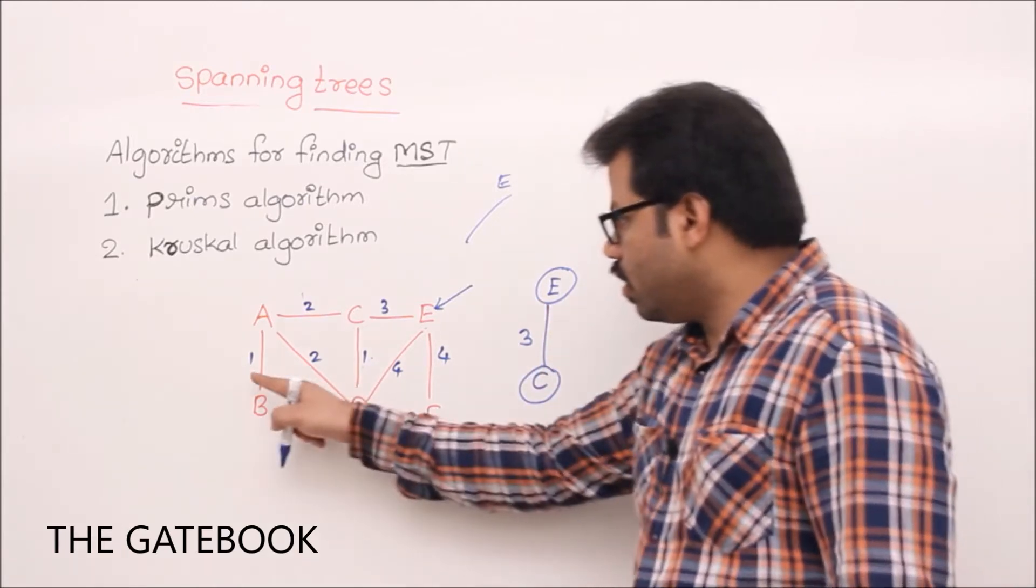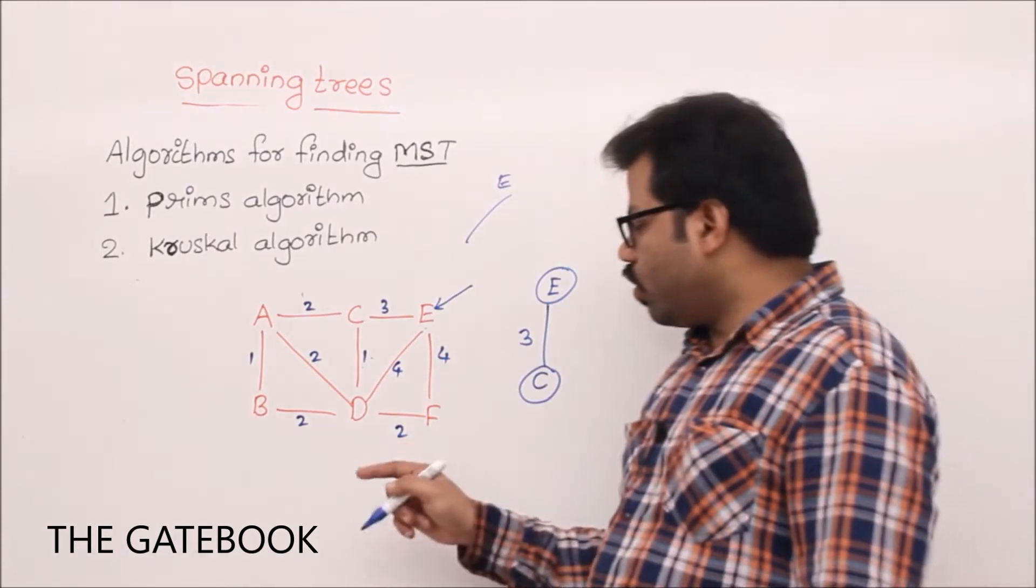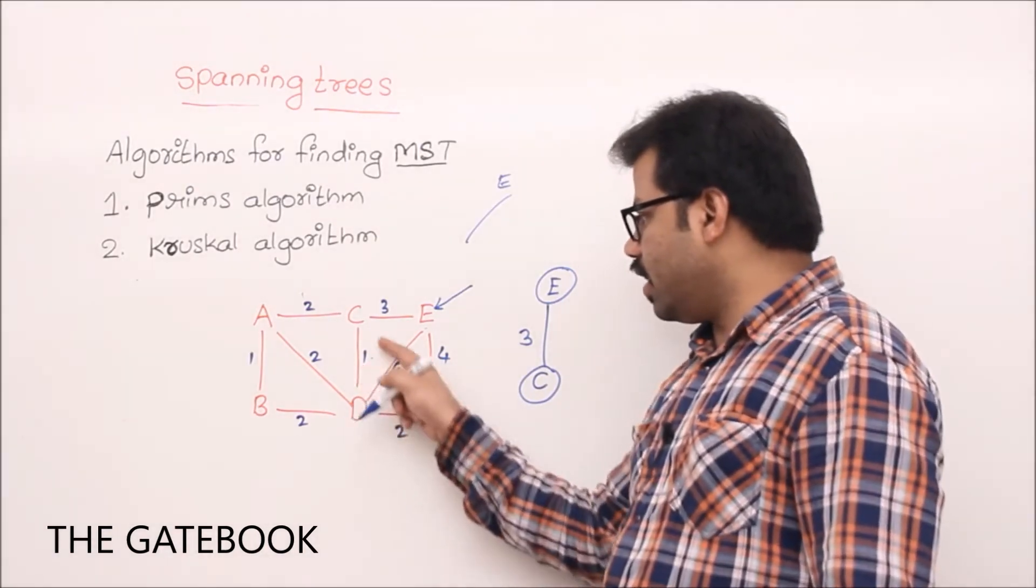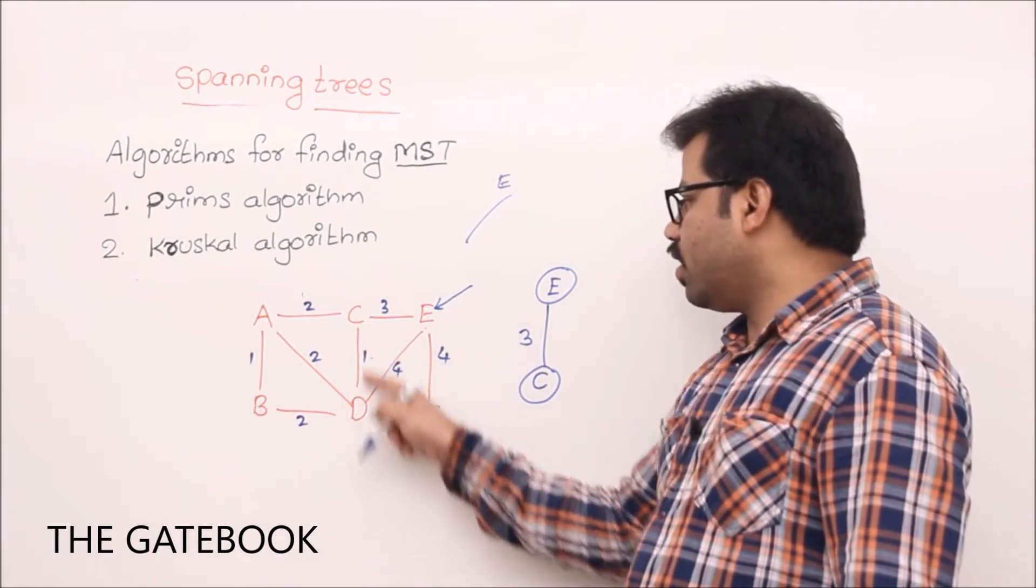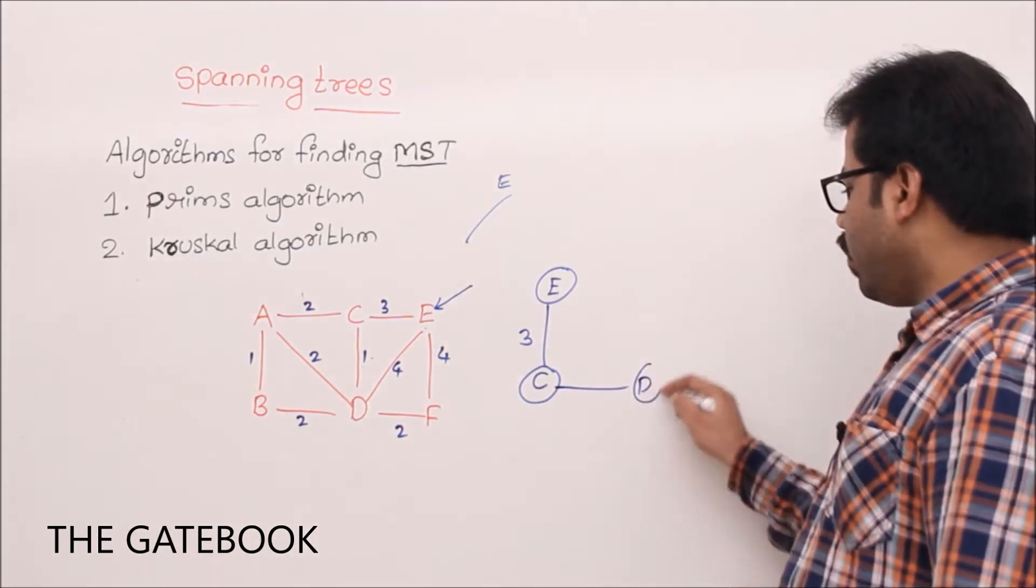Example, AB, correct? But A or B, nothing is visible. Then I can go to next minimum number. What is that? CD, correct? CD is 1, right? Then I will pick it because C is visible. So, in that way, I will pick CD.